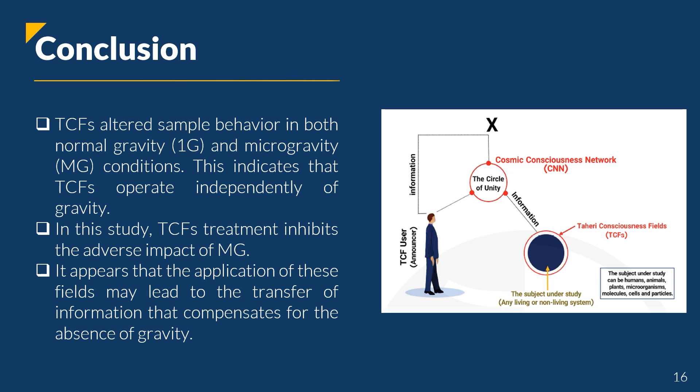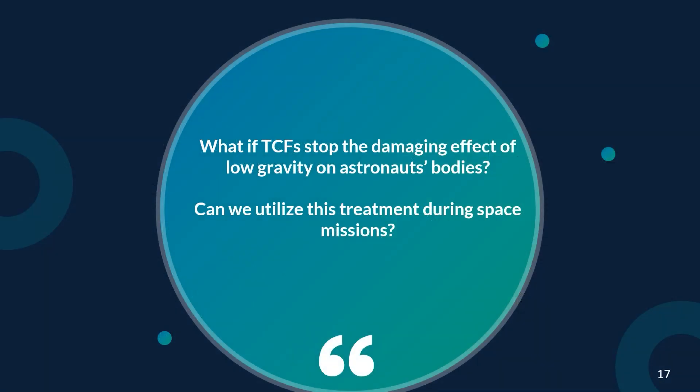In conclusion, T-Consciousness Fields altered sample behavior in both normal gravity and microgravity conditions, indicating that T-Consciousness Fields operate independently of gravity. In this study, T-Consciousness Fields treatment inhibits the adverse impact of microgravity. It appears that the application of these fields may lead to the transfer of information that compensates for the absence of gravity. What if T-Consciousness Fields could stop the damaging effects of low gravity on astronauts' bodies? Can we utilize this treatment during space missions?